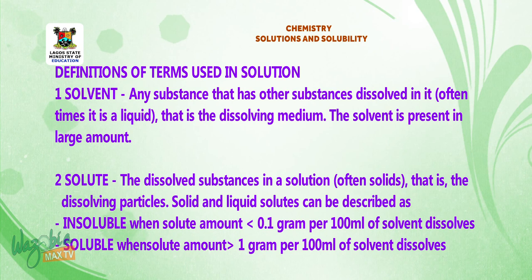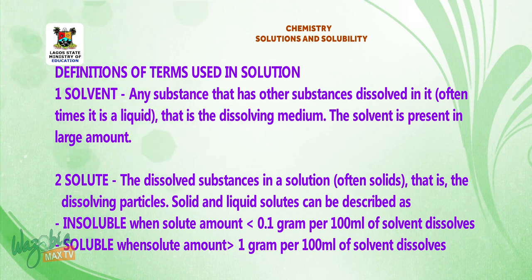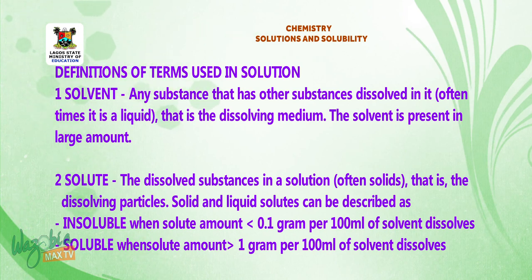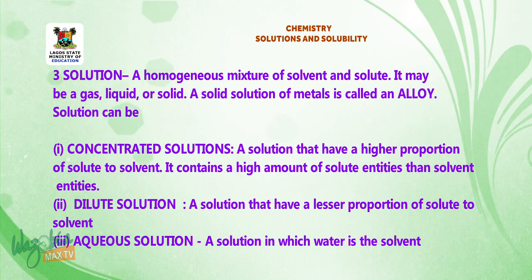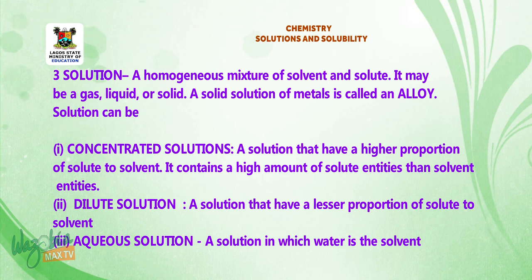Solid and liquid solutes can be described as: 1. Insoluble — when the solute amount is less than 0.1 gram per 100 ml of solvent that dissolves. Number 3: Solution — this is a homogeneous mixture of solvent and solutes. It may be a gas, liquid, or solid. A solid solution of metal is called an alloy.